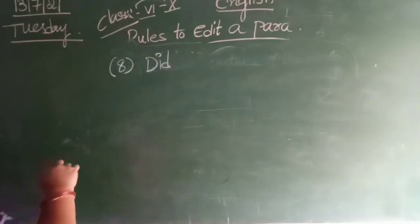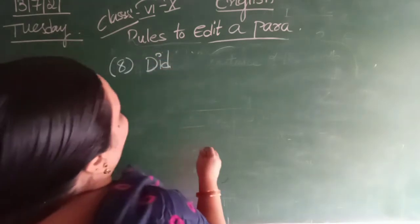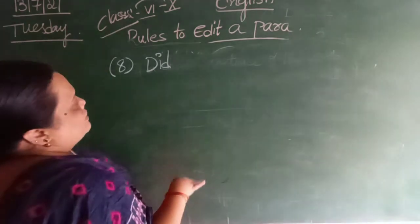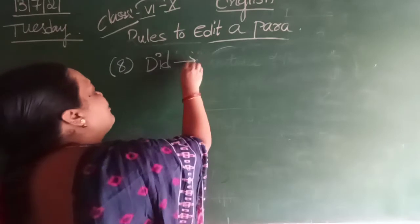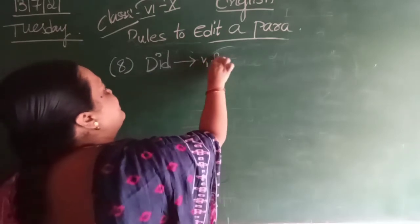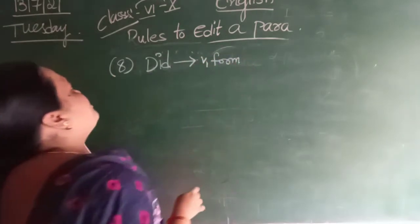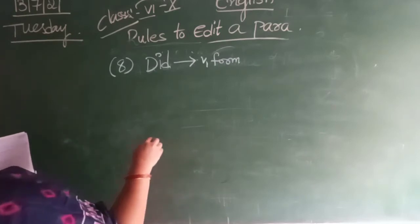Do, did it will be there now. So, whenever we get a did word in the paper, sorry in the error checkings, then it should be followed by V1 form. It should be followed by V1 form.